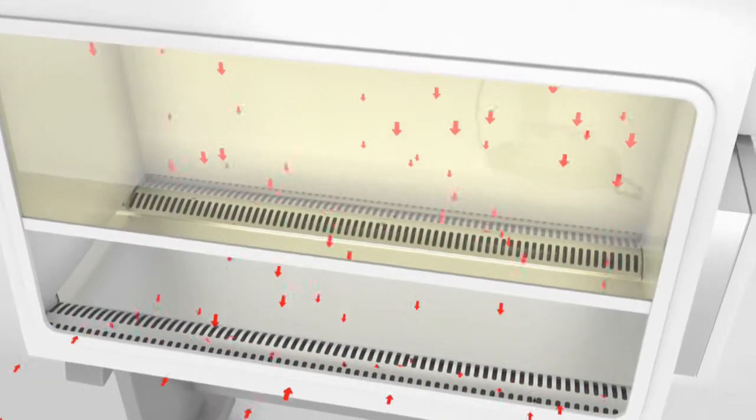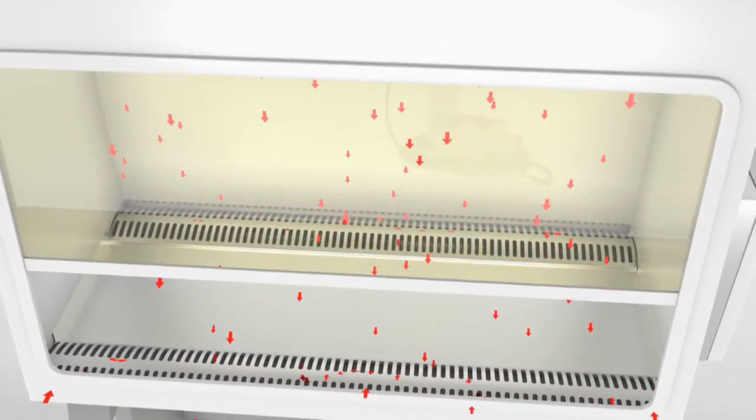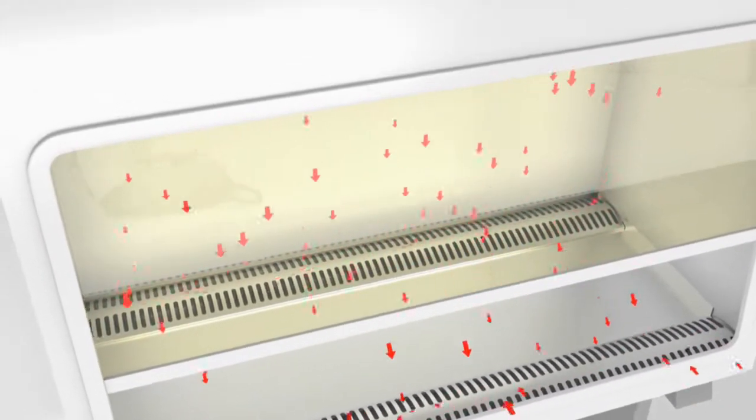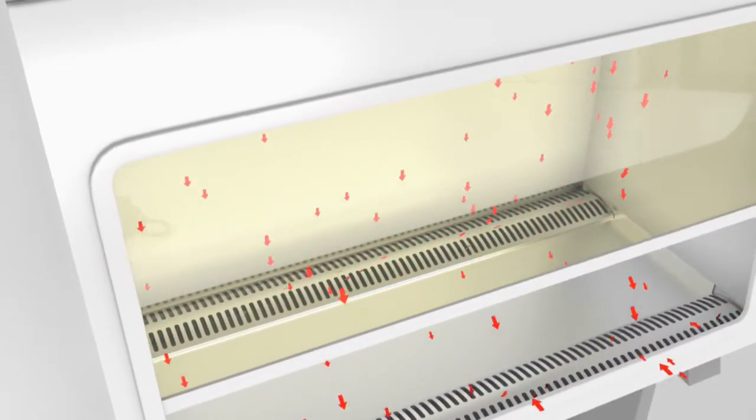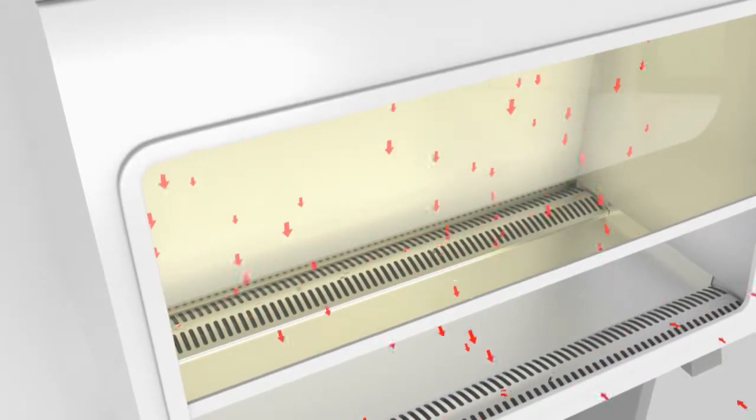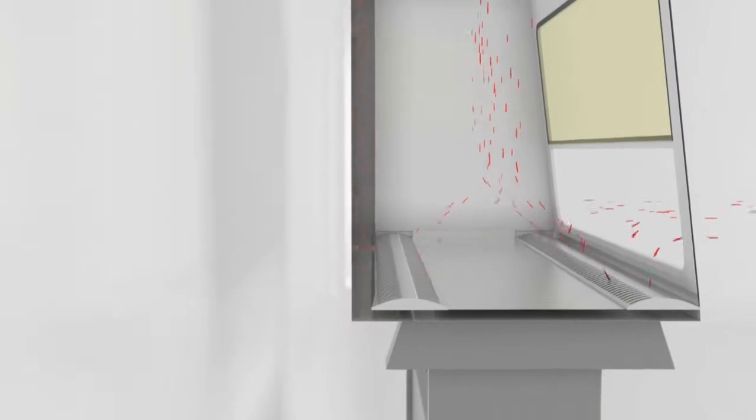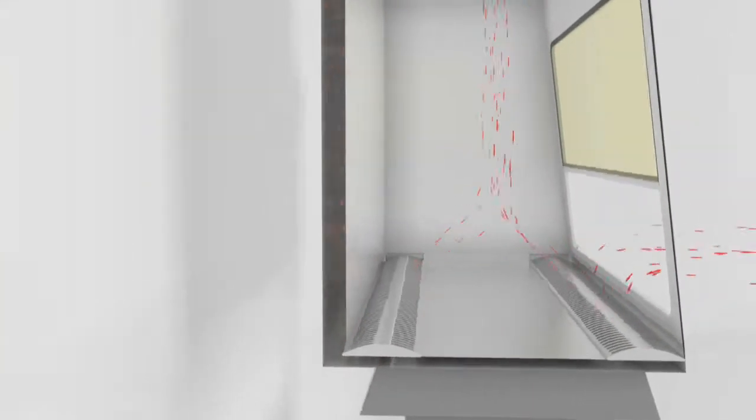Any aerosol particles at the work surface are immediately captured in this downward air flow and pass through the front or rear exhaust grills, achieving a very high level of protection for the operator and the environment. The air is then discharged through the rear plenum into the space between the supply and exhaust filters located at the top of the cabinet.